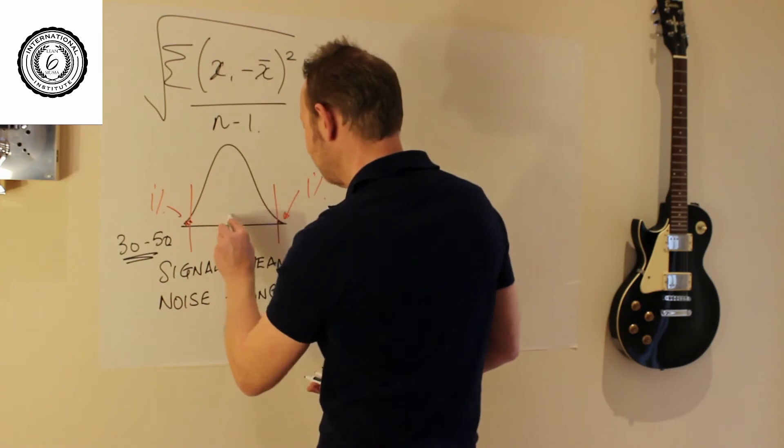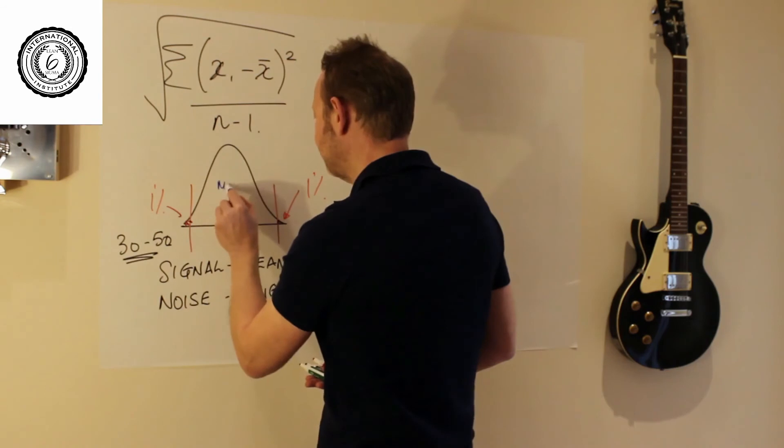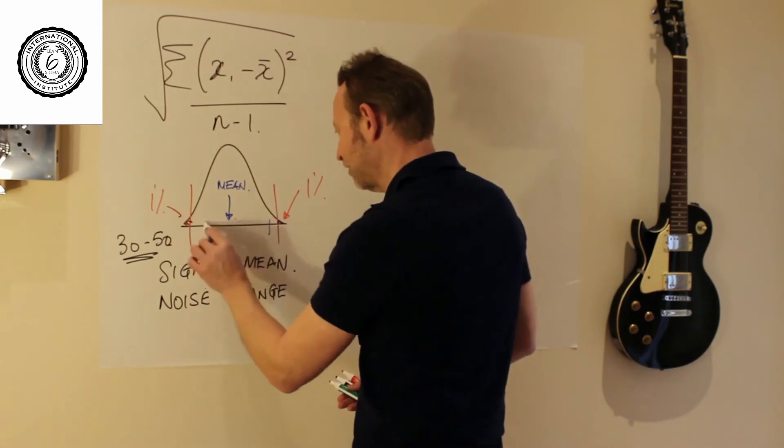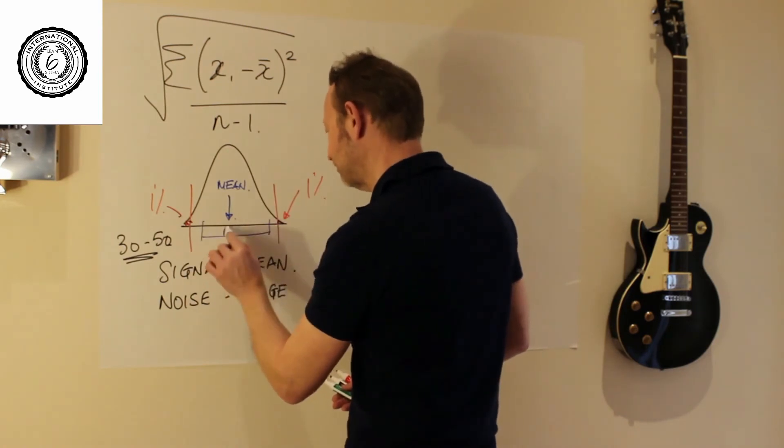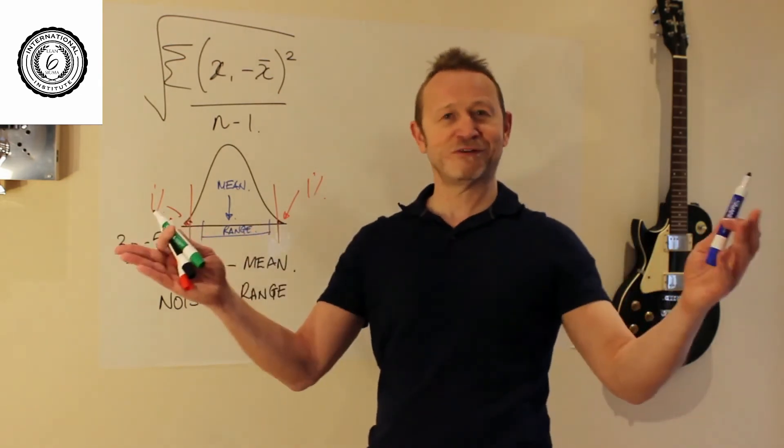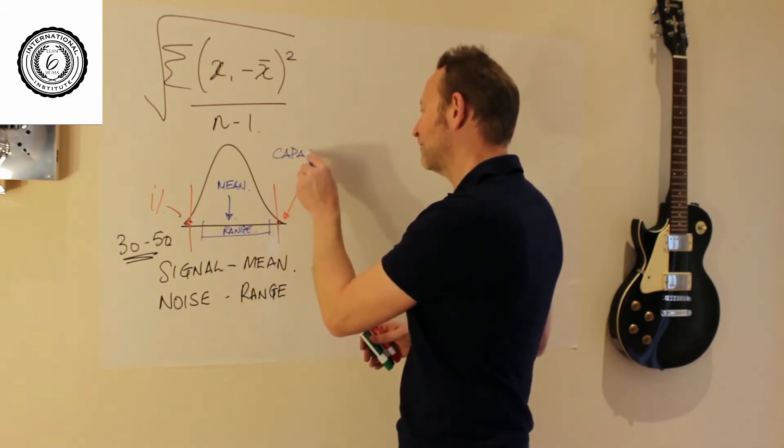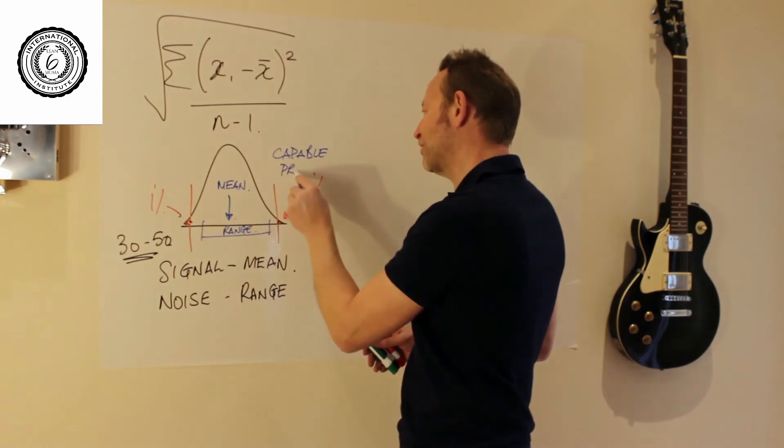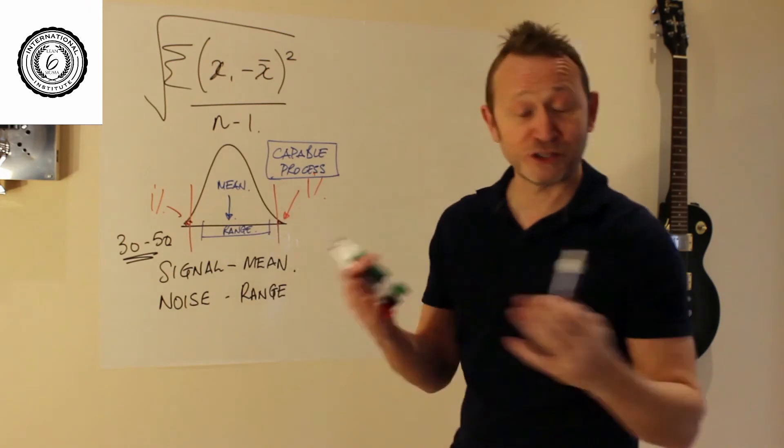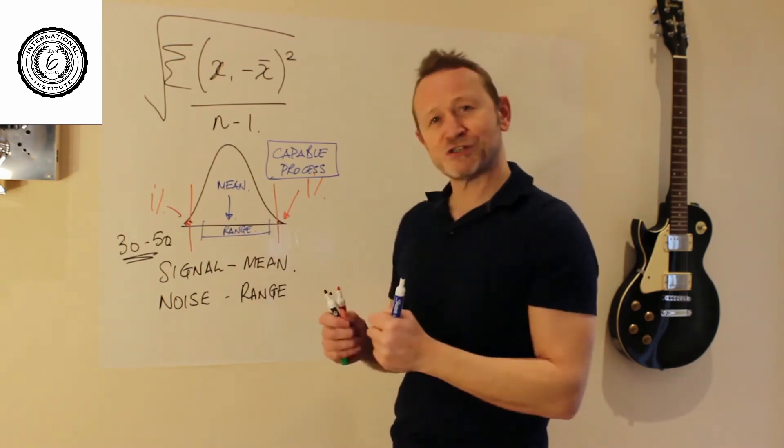Hopefully, of course, the mean is hitting the target and hopefully the range is inside the tolerance. And of course if you've got those two things, hey happy days. What you've effectively got is a capable process. And hopefully you're going to make a lot of money and you're going to have zero defects. Let's think about that for a second. So they're the statistics that we would like to use.